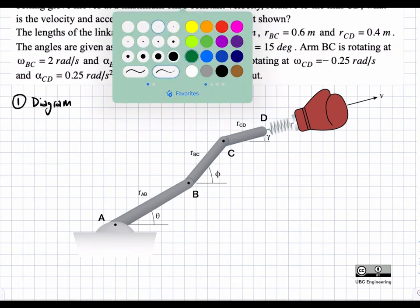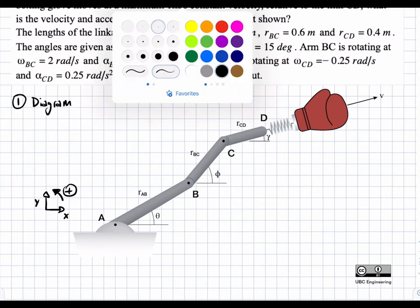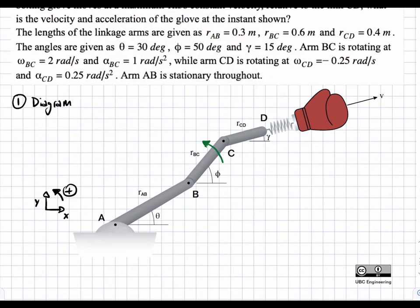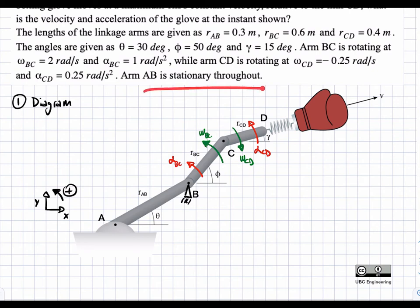We're going to draw our diagram on top of this diagram. Section BC is going to have an angular velocity of two radians per second. Drawing in our coordinate system: x is positive to the right, y is positive upward, and rotation is positive counterclockwise. So we label this as omega BC counterclockwise. Similarly, omega CD is in the opposite direction — it's negative, so it points the other way. These were both given. We also do the same for acceleration: alpha BC is positive, and alpha CD is also positive. Point B is fixed because of the stationary arm AB.